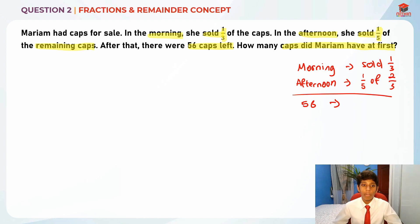After that she had 56 caps left. So 56 caps actually represent, she sold one fifth so remaining she has four fifths. So four fifths of two thirds, this is what 56 caps actually represent.